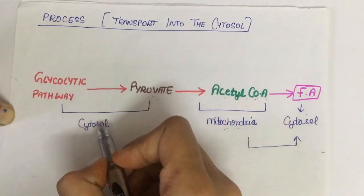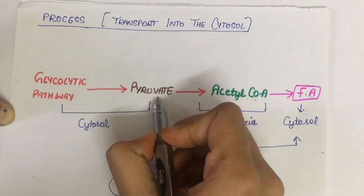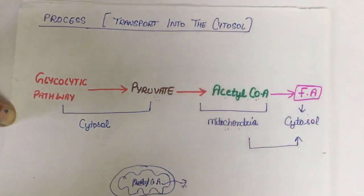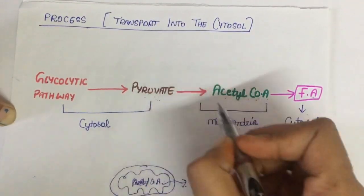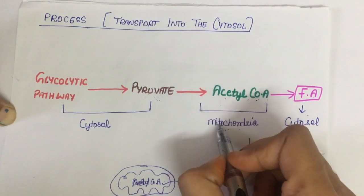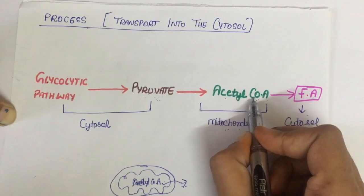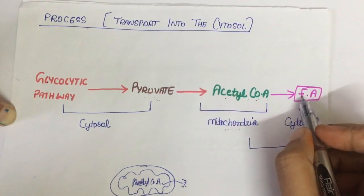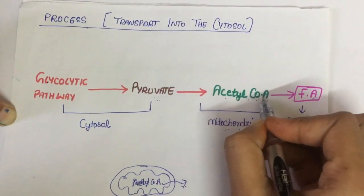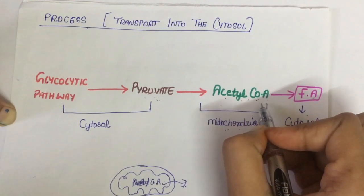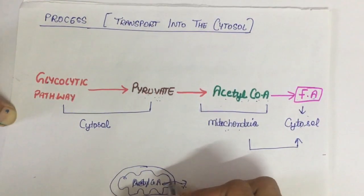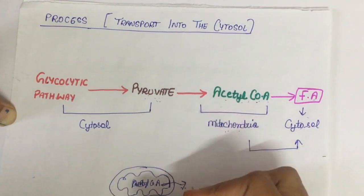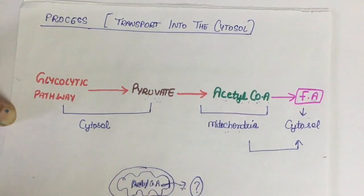Fatty acid synthesis starts from acetyl coenzyme A and NADPH, and this process is going on in the cytosol. Pyruvate migrates from cytosol to mitochondria — the mitochondrial membrane is permeable to pyruvate, so this migration is not a problem. Once it reaches the mitochondria it starts forming acetyl coenzyme A, but acetyl coenzyme A is not permeable to the inner mitochondrial membrane, so it needs to get modified to move out.